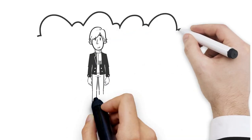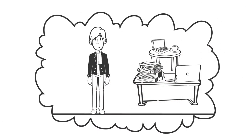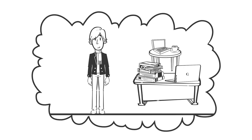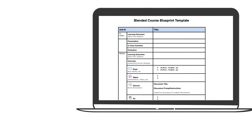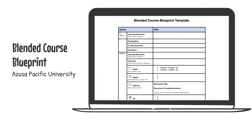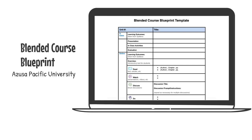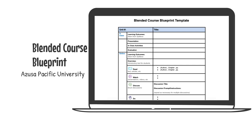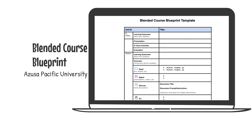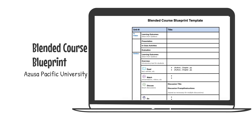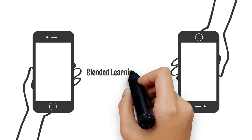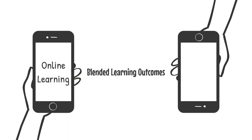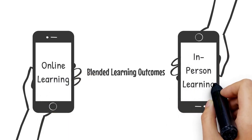Once you understand your learners and their environment, it's time to start focusing on the practical aspects of designing your blended learning course. The blended course blueprint, which can be found in the learning resources section of this lesson, starts with your learning outcomes. As educators, we all know that having well-defined learning outcomes is very important. You want to think through which of your outcomes are best suited to online learning, and which are best suited to in-person learning.